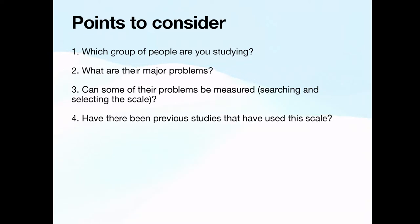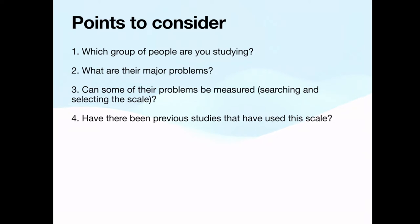The fourth thing to consider is: have there been previous studies that have used the scale? You need to find out whether previous studies have used the scale because that ensures the scale is standardised — that is, the validity as well as the reliability of the tool has been determined. Validity and reliability are very important indicators of the quality of a scale, so you need to be sure whether the scale is standardised or not.